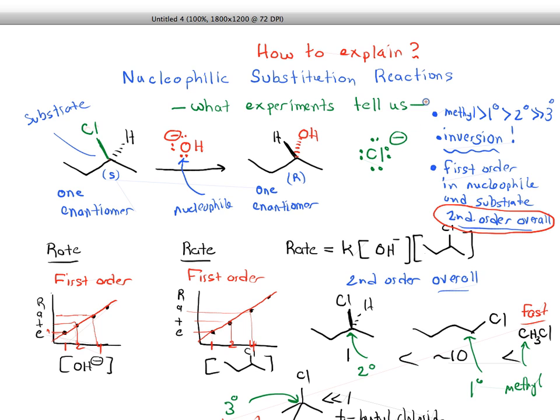We said that it had a number of very interesting features. First of all, it went with inversion, so it started with one enantiomer and went to another. Secondly, it was first order in both nucleophile and substrate, so second order overall in both 2-chlorobutane and hydroxide ion.